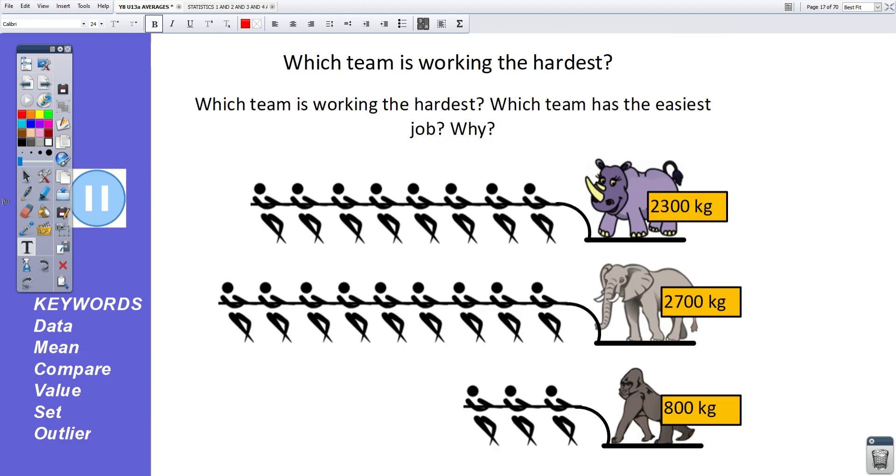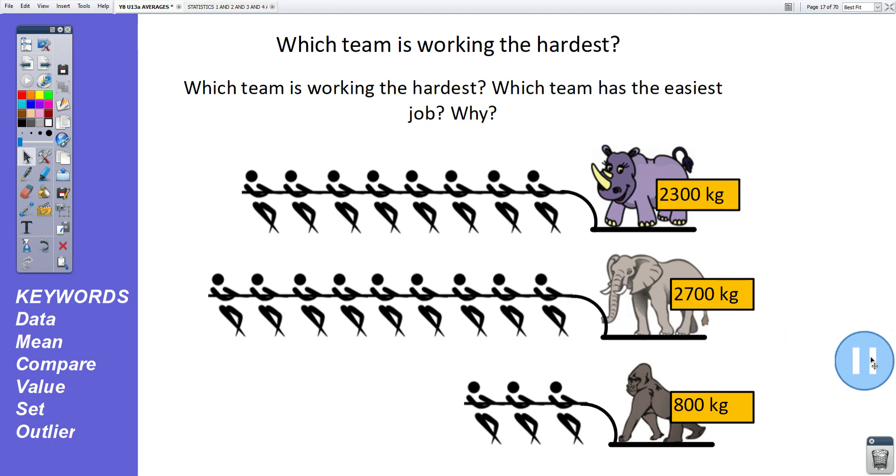Right, which team is working the hardest? We've got three teams tugging three heavy animals. Smiling hippo, rhino, an elephant, and a big gorilla. These are their weights. 2,300 kilograms, 2,700 kilograms, and 800 kilograms. Which team is working the hardest? Which team has the easiest job? And why? So, pause the video, please. Work out your answer.